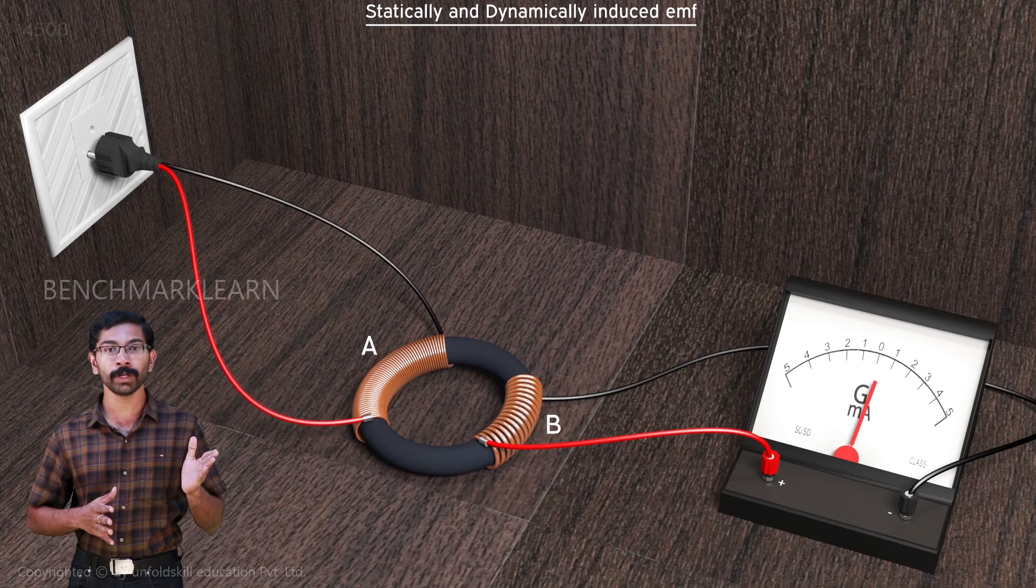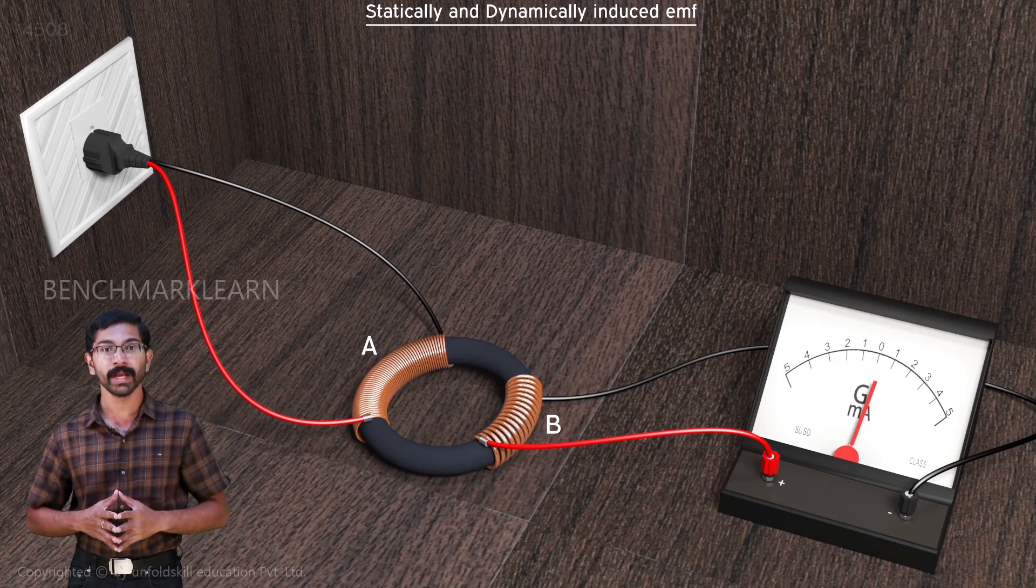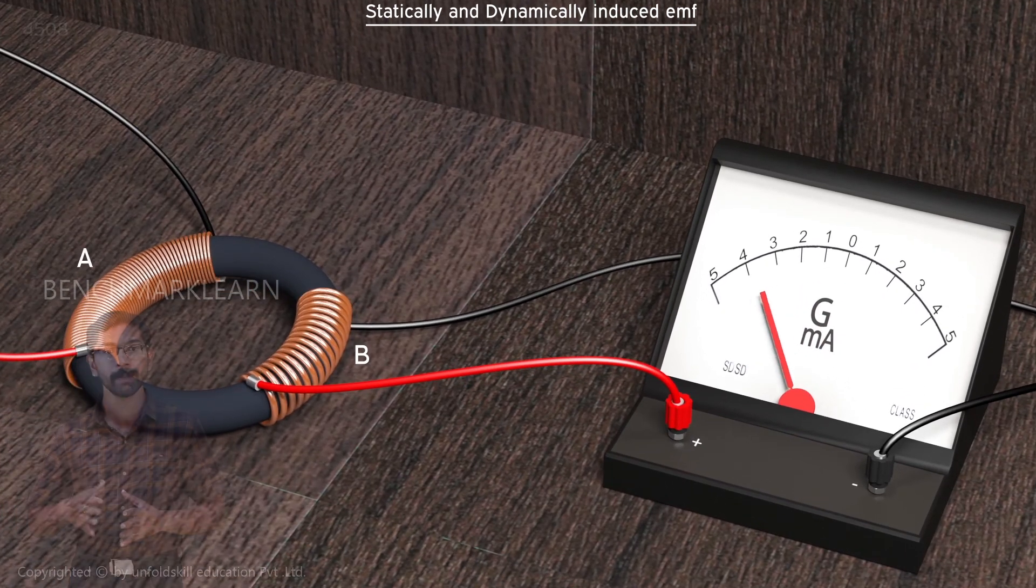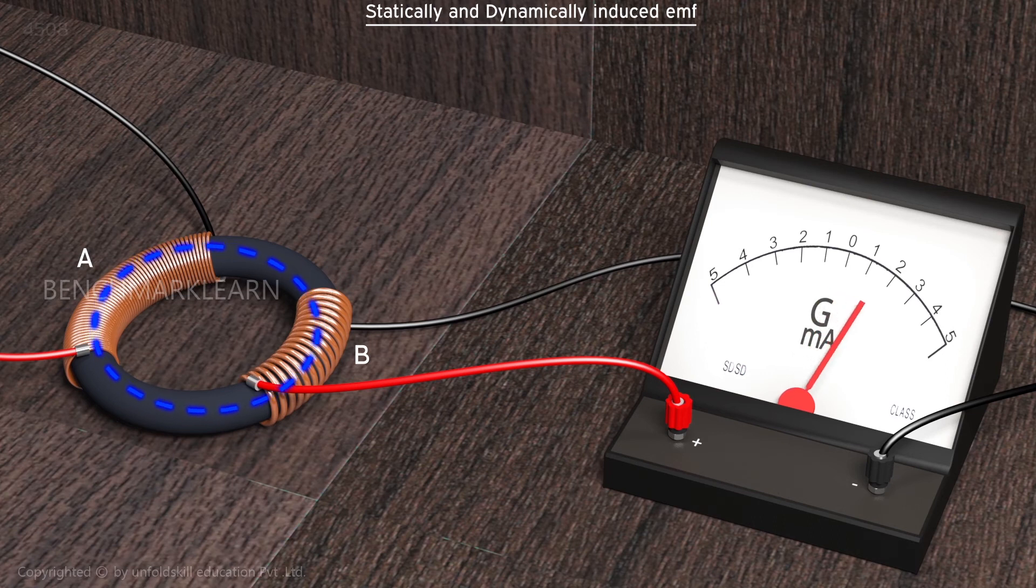We connect a low voltage, low frequency AC source to coil A. When a time varying current flows through the coil, a time varying magnetic flux is also created. This flux readily passes through the iron core and links with the coil B.